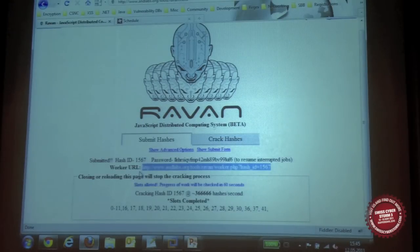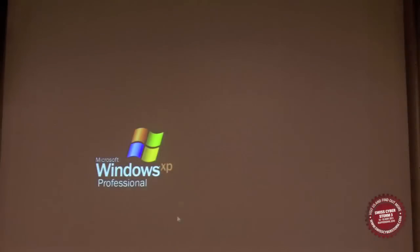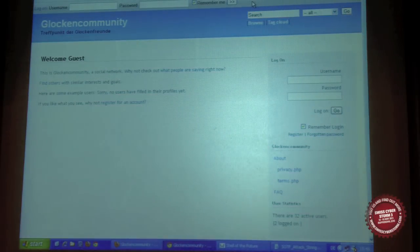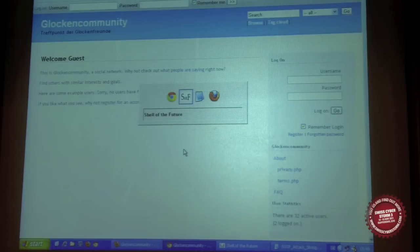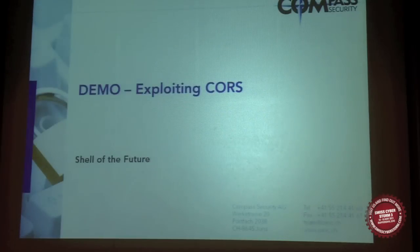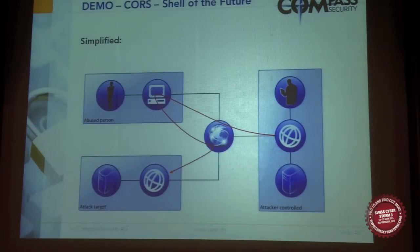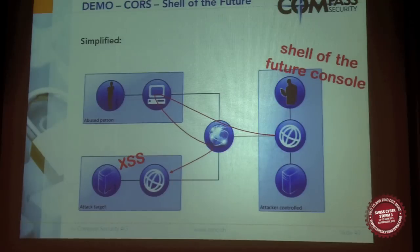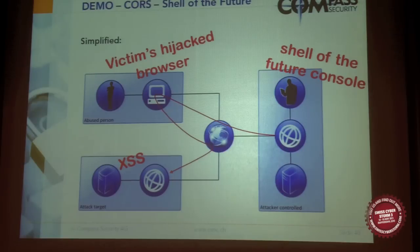Let's show the second demonstration: the CORS request attack. Let me show you a few slides for a better understanding. Here is a simplified demonstration of the attack. As an attacker, we look for a cross-site scripting vulnerability on a website. Then we start the shell of the future on our server. We include the malicious JavaScript via the XSS vulnerability found, and the victim's browser gets infected and can then be hijacked by the attacker — completely remote controlled.